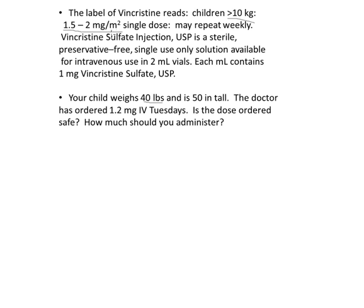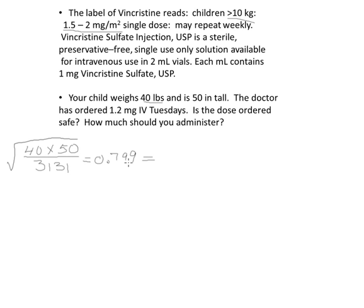The 'meter squared' is our sign that we need to calculate body surface area. I use my formula: I take the square root of the weight, 40, times the height, 50. These are English units, so I divide by 3131. I put that all in my calculator and come up with a value of 0.799. We typically round body surface area to hundredths, so that 9 rounds to a 0, giving me 0.8 meters squared. Recall that with metric measurements, we are not allowed to have extra zeros, so the hundredth place is not written out, even though that's where I rounded.